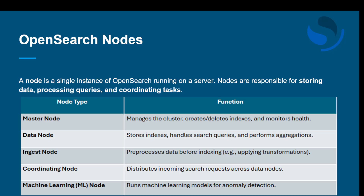The data node stores and searches the data, handling search queries and aggregations. The ingest node prepares and transforms data before storing it — any pre-processing or transformation needed before indexing is done on this node. The coordinating node distributes search requests across data nodes. The machine learning node runs AI-based analysis, such as detecting unusual patterns or anomalies.